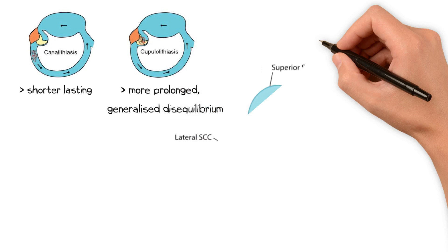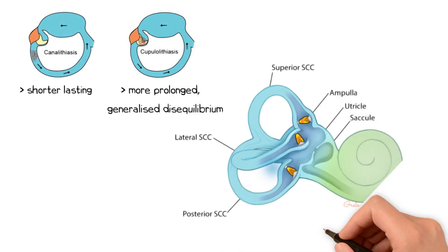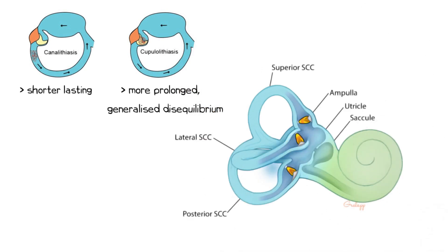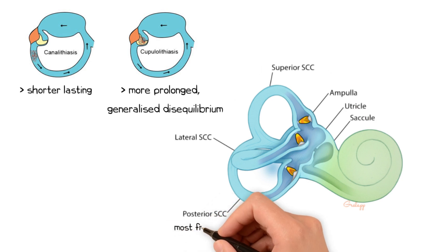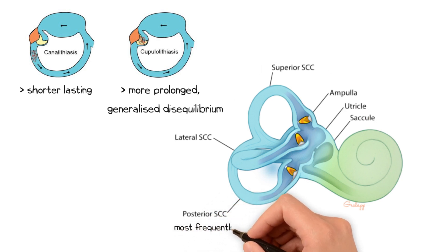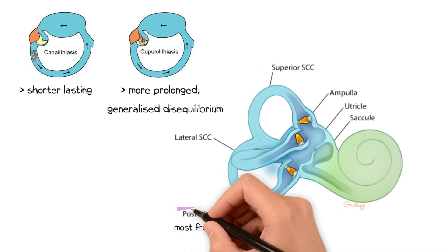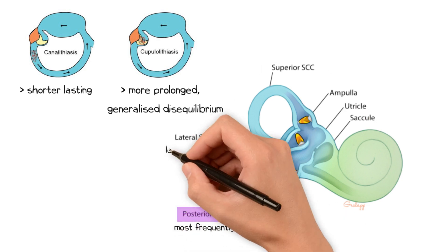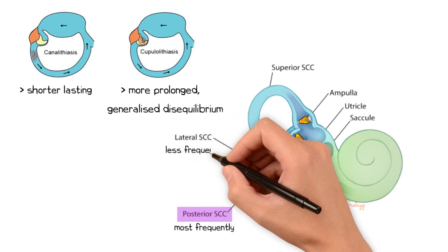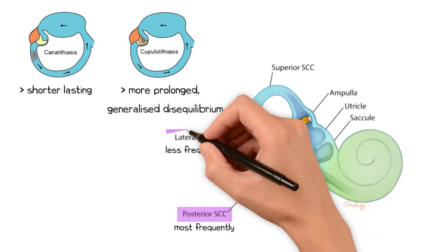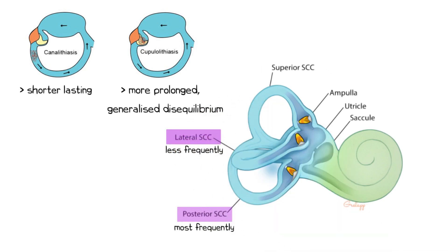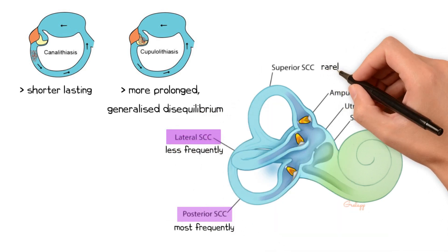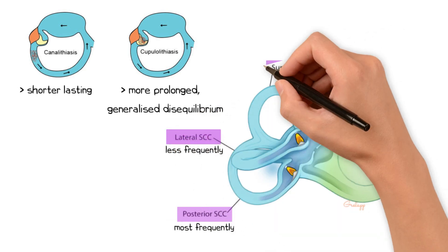Due to the position of the utricle in relation to the semicircular canals and the effect of gravity, displaced otoliths most frequently migrate into the posterior semicircular canal. Less frequently they migrate into the lateral semicircular canal, and extremely rarely into the superior semicircular canal.